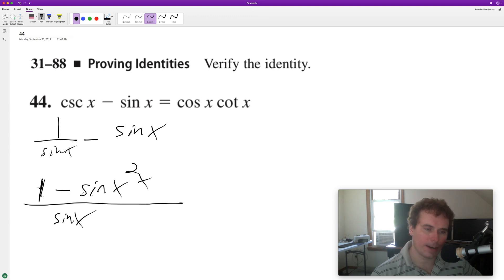Sine of x. All right, and then 1 minus sine of x is equal to cosine squared x over sine of x. We can break this down to cosine x times cosine x.